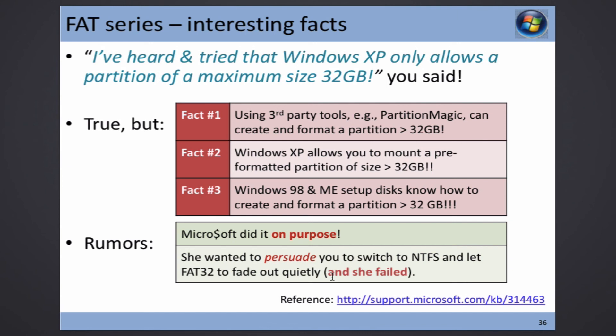They failed — they couldn't kill FAT32. It's too strong. All kinds of mobile storage still use it. Microsoft did this on purpose but failed. Now they are trying to push another thing called exFAT. How many of you have heard of exFAT? Only three people? You're engineering students — you should know exFAT!